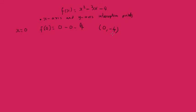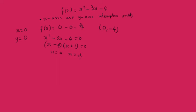Now we want to find where it cuts the x-axis, so when y equals 0, we set x squared minus 3x minus 4 equals 0 and factorize. That gives us (x minus 4)(x plus 1) equals 0, so x equals 4 or x equals minus 1. There are two points where it cuts the x-axis: (4, 0) and (−1, 0).